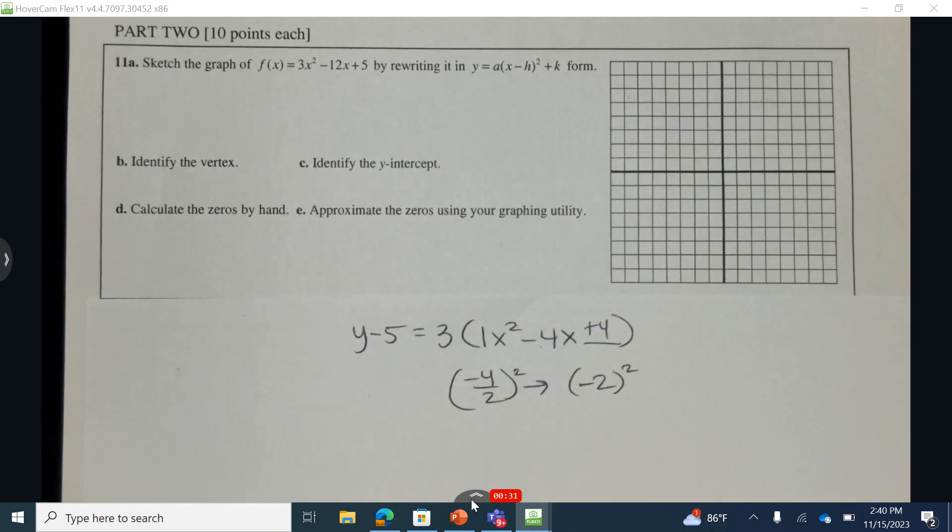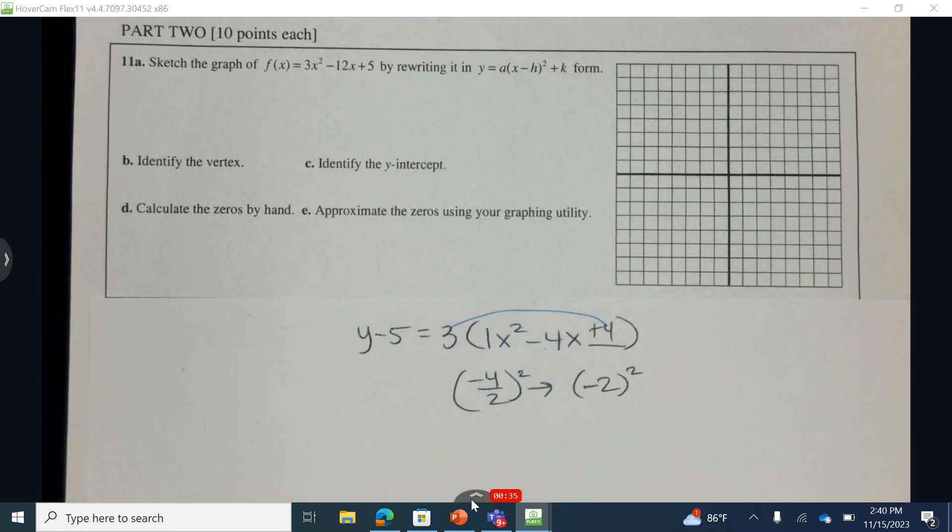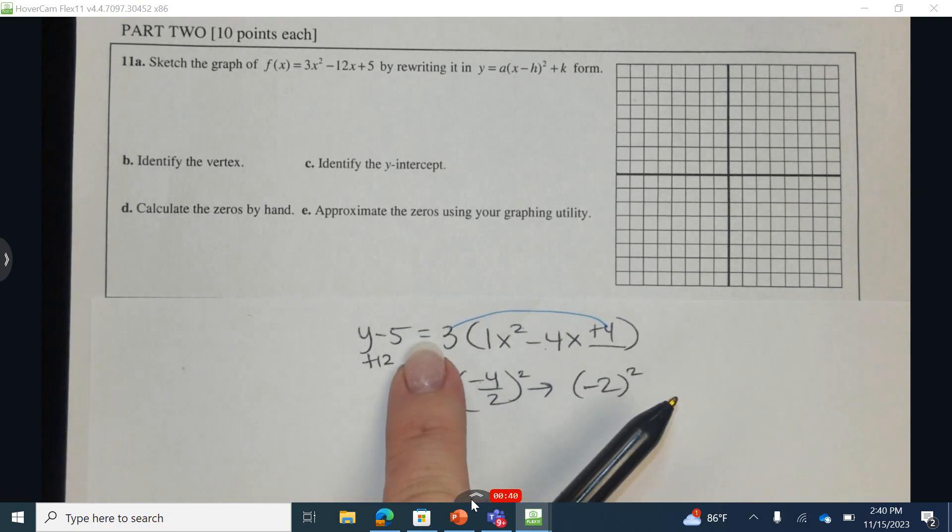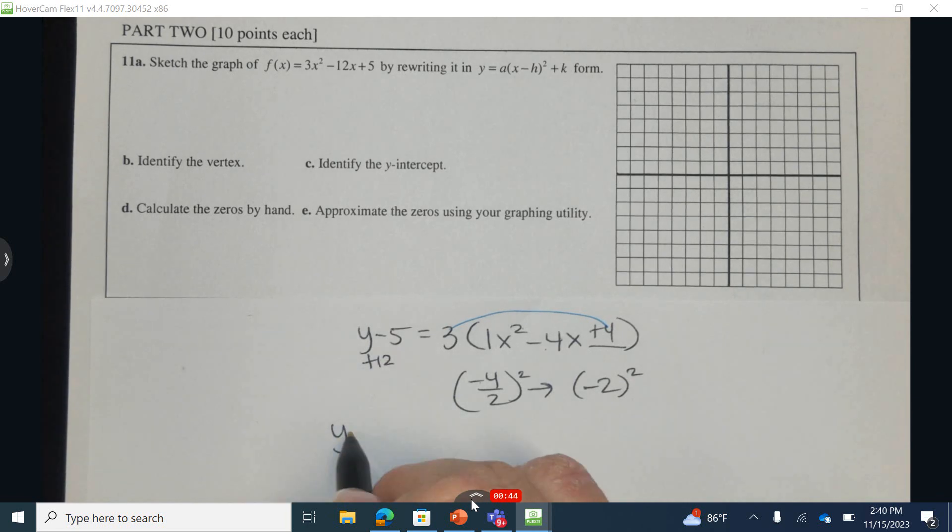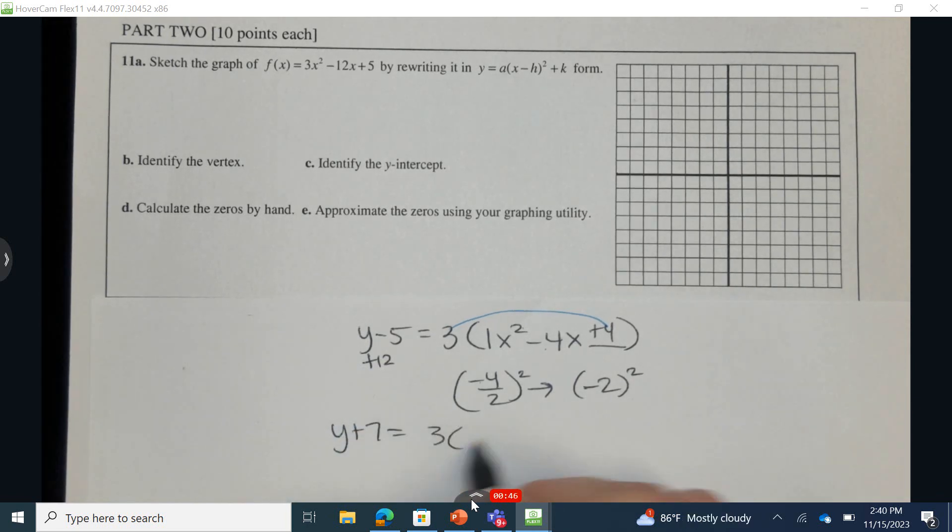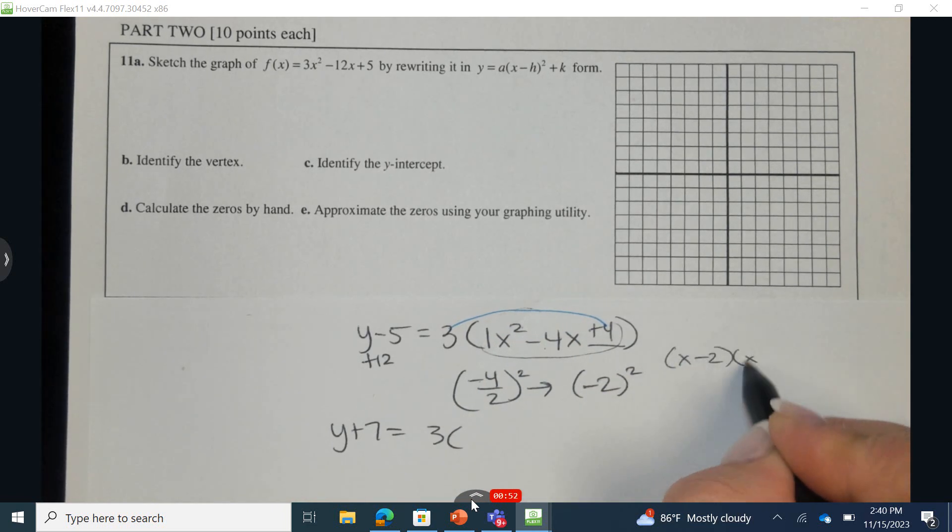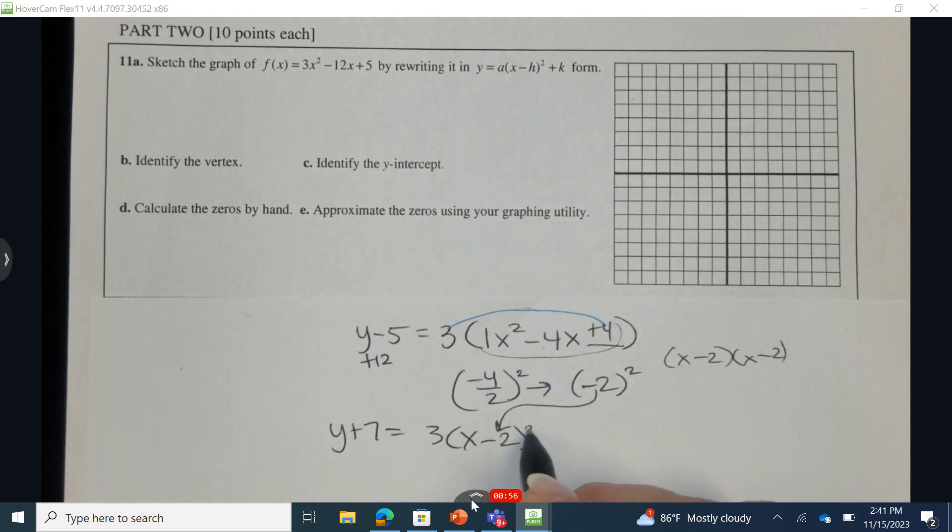But we did not actually just add 4 to the right-hand side. In fact, it was a positive 12 that was added to the right. So a positive 12 must be added to the left to keep the equation balanced on the left and right. y plus 7 equals, now if you went ahead and you factored this, it would turn into x minus 2 and x minus 2.